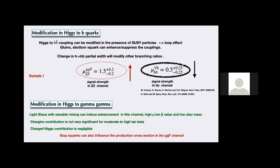For rare processes like H→γγ, which is a loop process in the Standard Model, you can also have contributions from stau loops, chargino loops, and charged Higgs contributions. For H→gg, which is the production process via gluon fusion, instead of a top triangle you can also have a stop triangle, which can also modify the overall production process in gluon fusion.